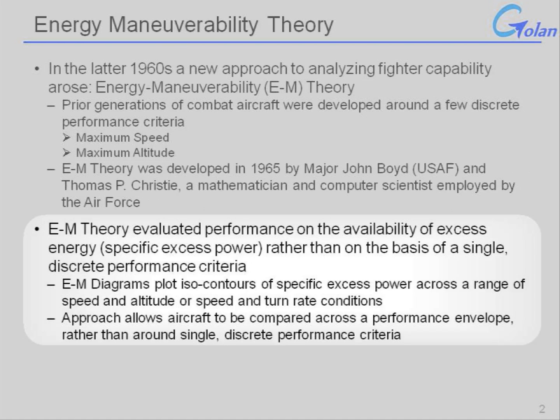EM theory approached fighter capability from a global standpoint. What it did is it evaluated excess energy, or specific excess power, across the spectrum of the envelope, rather than settling on a particular narrow flight condition or a particular speed. What it does is it creates isoplots of specific excess power across a range of speed and altitude, or speed and turn rate conditions. This allows aircraft to be compared across an envelope rather than a single discrete criteria.